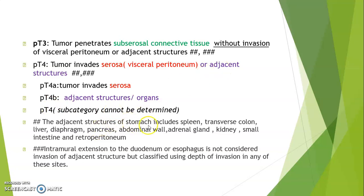The adjacent structures of the stomach include the spleen, transverse colon, liver, diaphragm, pancreas, abdominal wall, adrenal gland, kidney, small intestine, and retroperitoneum. Importantly, intramural extension to the duodenum or esophagus is not considered invasion of adjacent structures, but is classified using depth of invasion at any of these sites. So duodenum and esophagus are not considered adjacent structures for stomach staging.